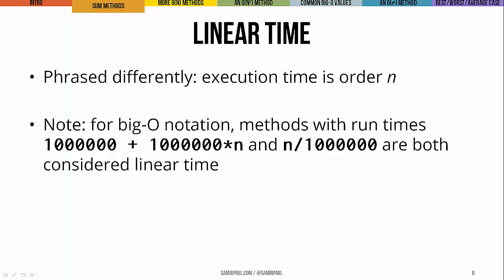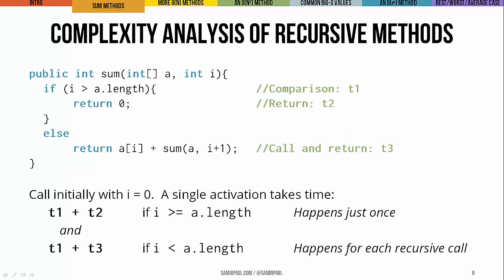One quirk of this kind of back-of-the-envelope runtime calculation is that in big O notation, we don't really draw a distinction between a method whose runtime is a million plus a million times n, and one that is n over a million. They're both considered linear time methods — both of the same order — even though in practice the difference is quite large.